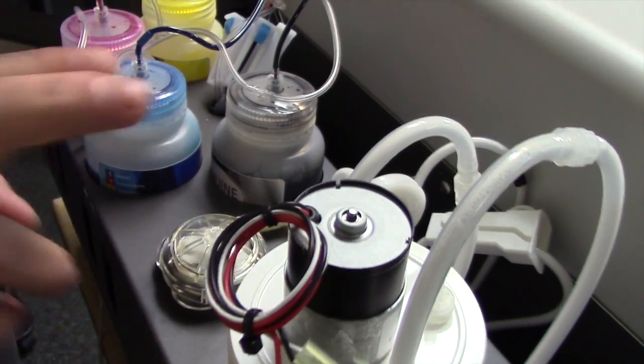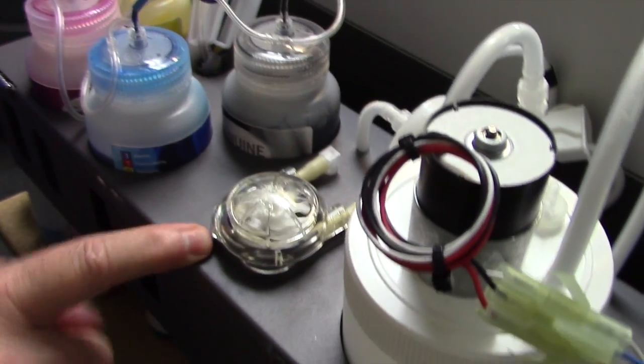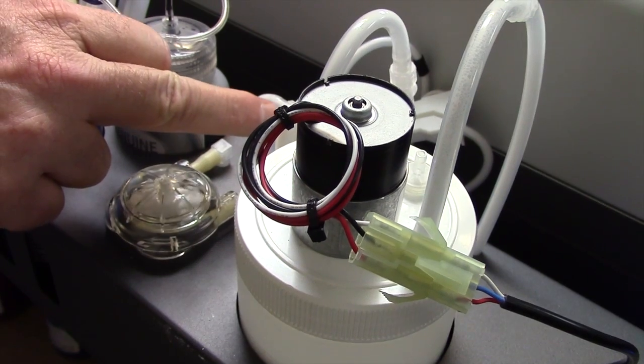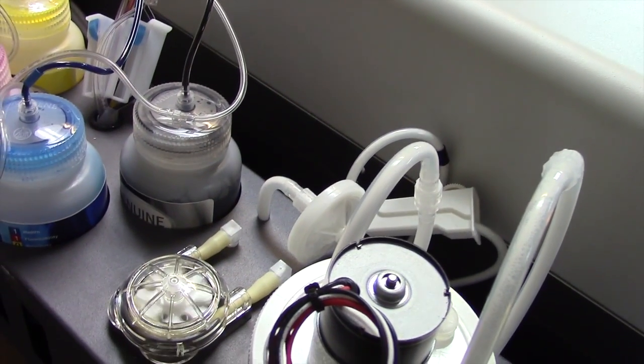What is happening is every time this is activated, this peristaltic pump actually draws the ink out of the white ink container through this filter that actually filters the ink on every pass and then pushes it up to the front of the printer.